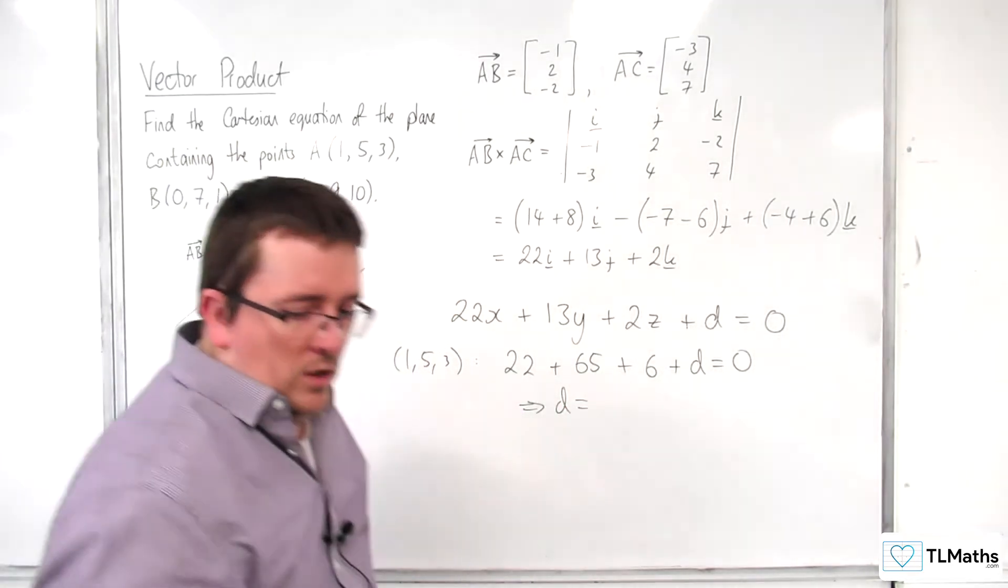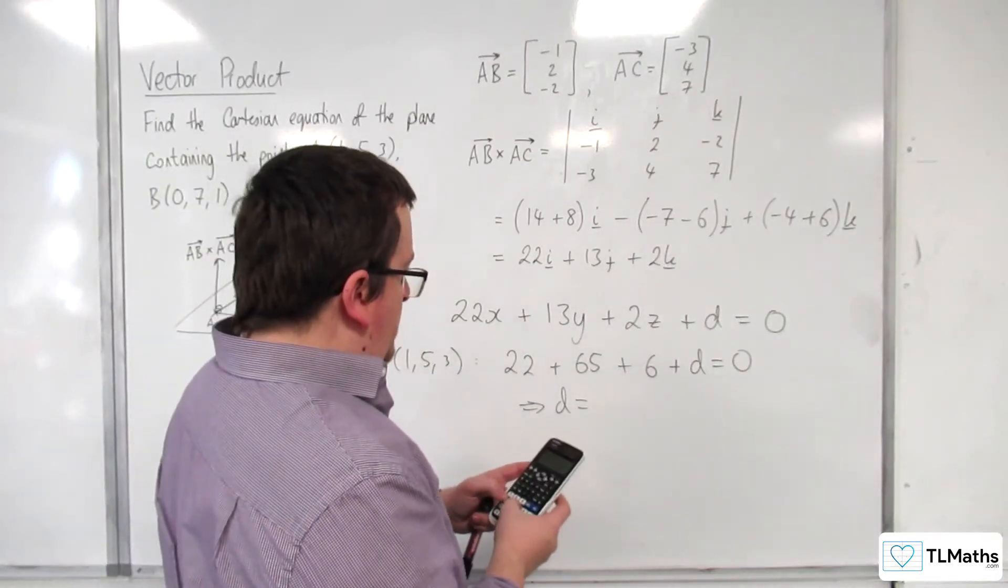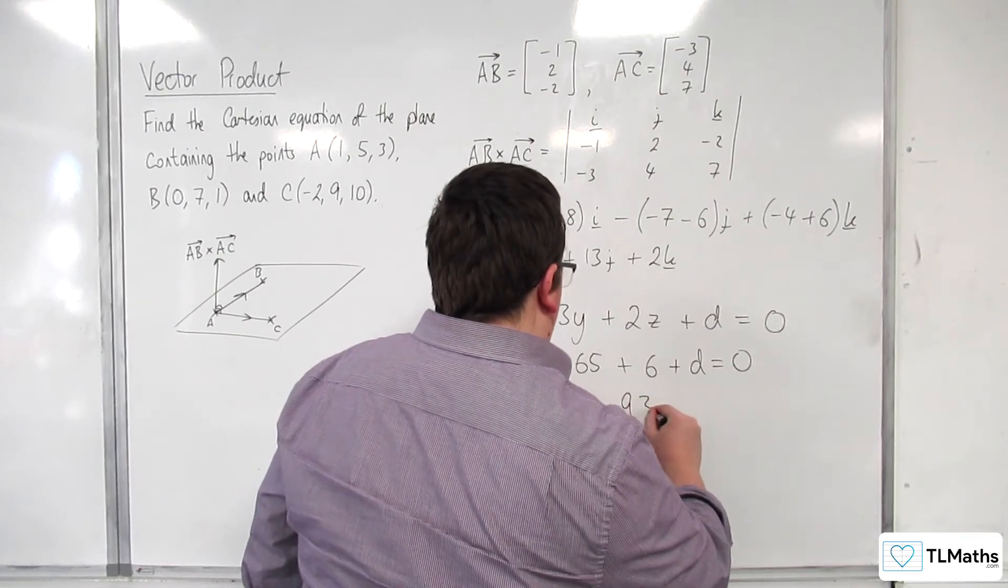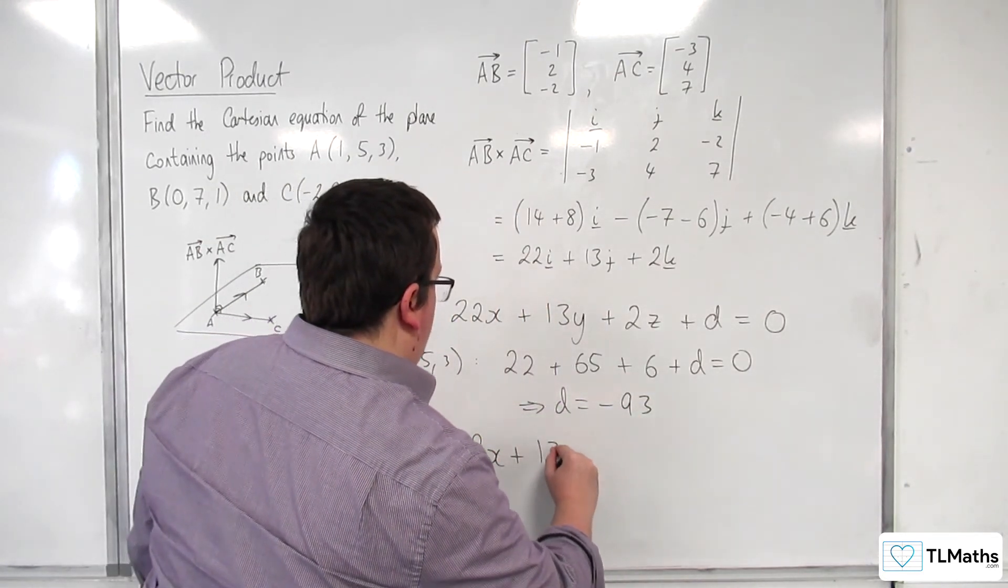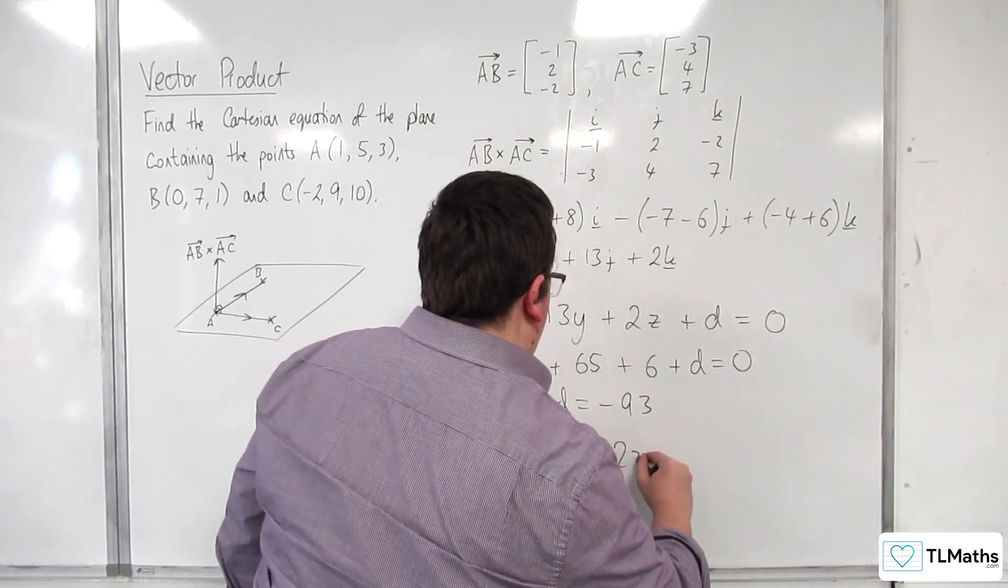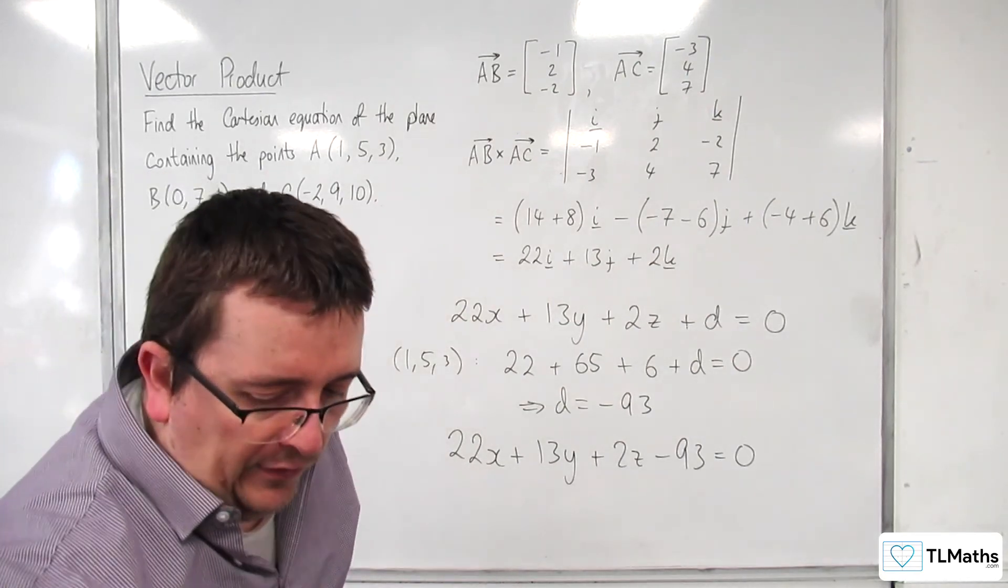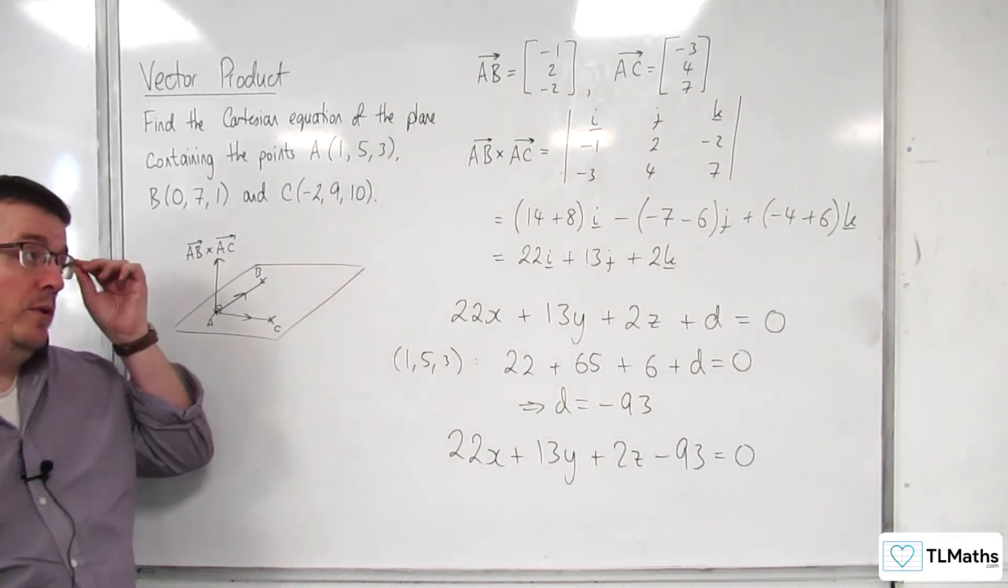Okay, so we've got 22, 65, and 6, so 93. So minus 93 for D. So 22X plus 13Y plus 2Z take away 93 is equal to 0. And so that is the Cartesian equation of the plane containing those three points.